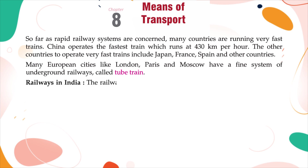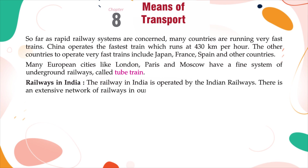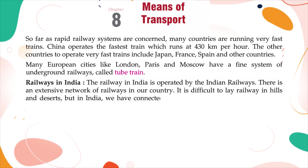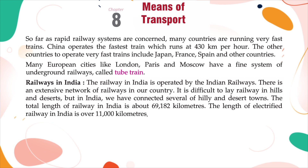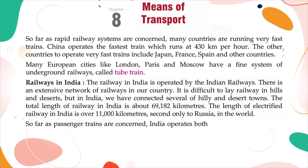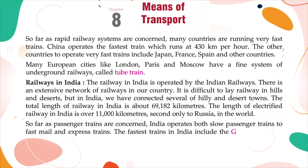Railways in India: The railway in India is operated by Indian Railways. There is an extensive network of railways in the country. It is difficult to lay railway in hills and deserts, but in India we have connected several hilly and desert towns. The total length of railway in India is about 69,182 km. The length of electrified railway in India is over 11,000 km, second only to Russia in the world. India operates both slow passenger trains to fast mail and express trains.